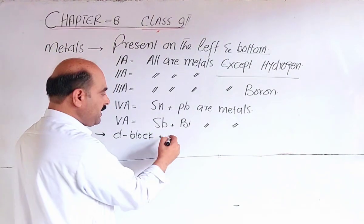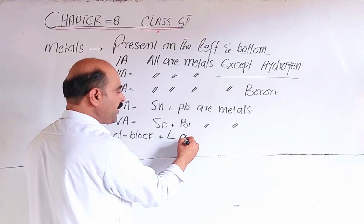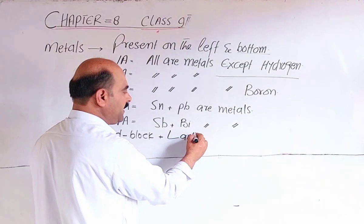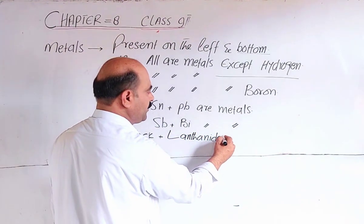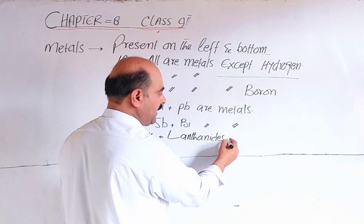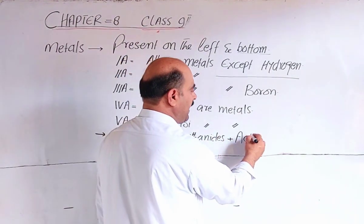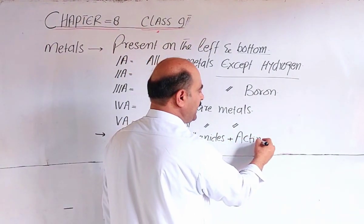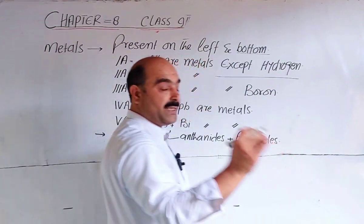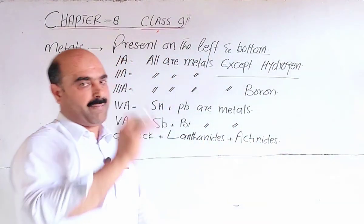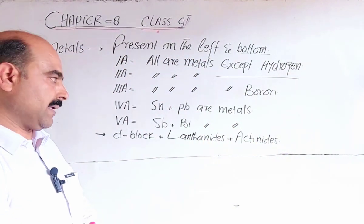The d-block elements are found at the bottom middle of the periodic table. The lanthanide series has 14 elements, and the actinide series also has 14 elements. All d-block, lanthanide, and actinide elements are metals.